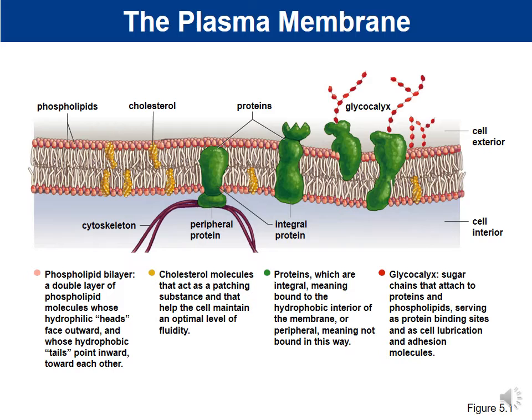The cell membrane has four main components: a phospholipid bilayer, cholesterol, proteins, and something called glycocalyx. We're going to talk about what each of those four components does.